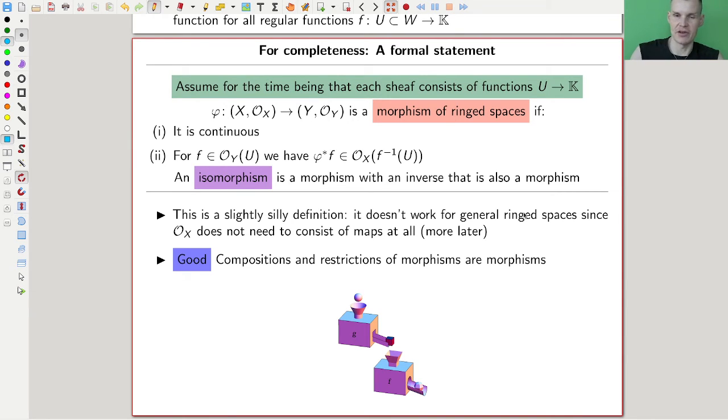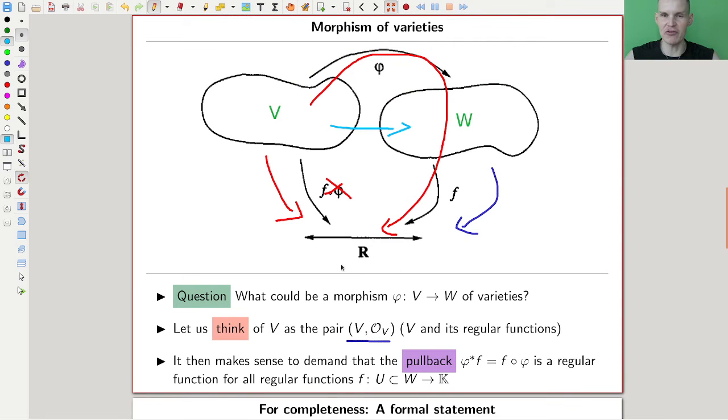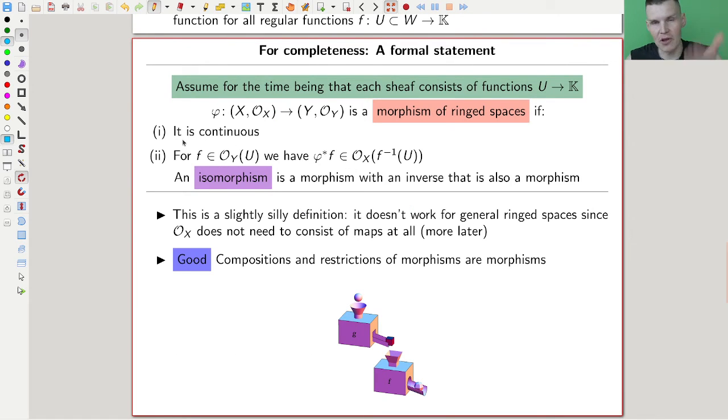But anyway, so this definition satisfies all the properties you want the morphisms to satisfy. Compositions of them still have the same property, you have restriction properties and many other things that I have to postpone for another video. So this is really the right definition. It looks a bit strange, but maybe if you have this picture in mind, it's kind of the only thing you can do, the only thing you can really demand if you have regular functions attached to your spaces, right?